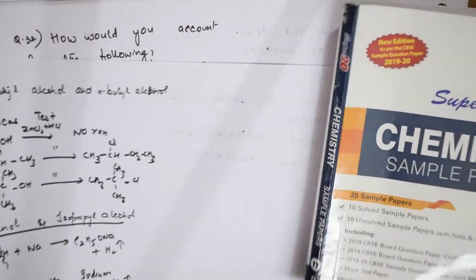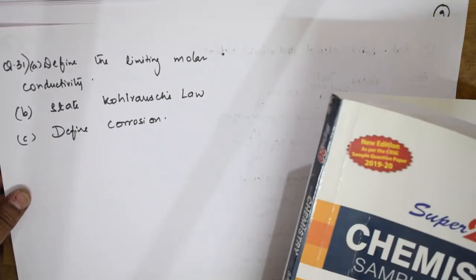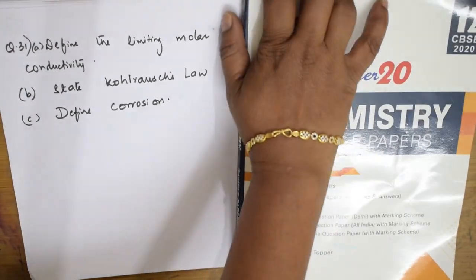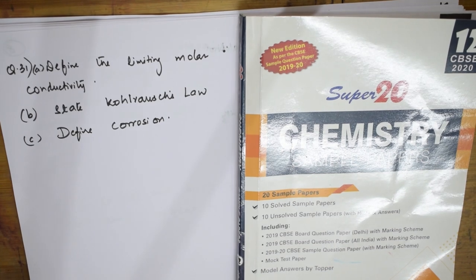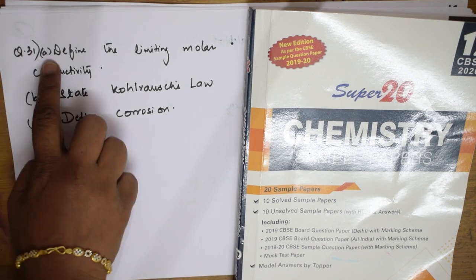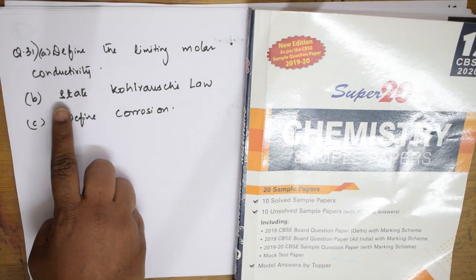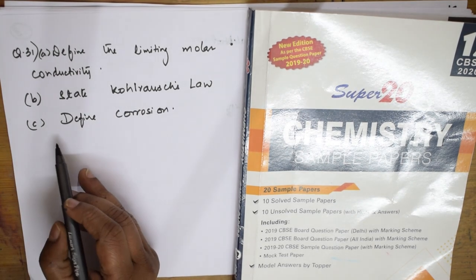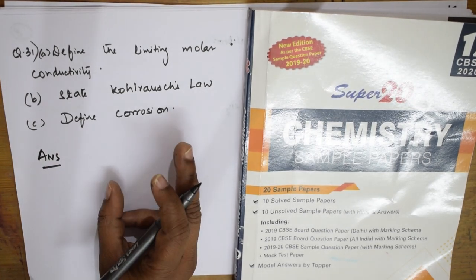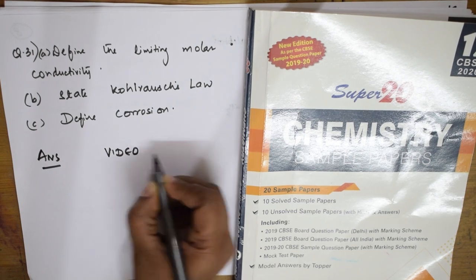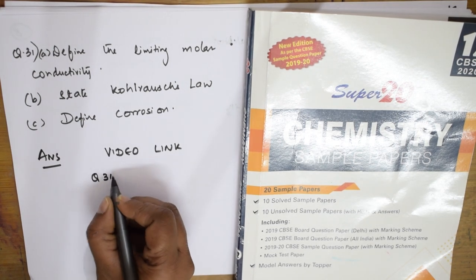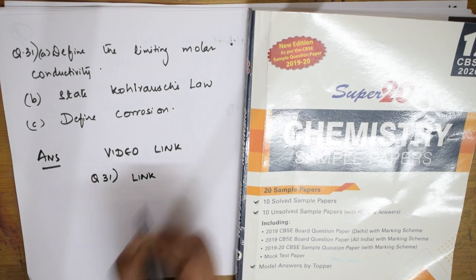Question 31 is from the electrochemistry chapter. The sub-parts ask you to: define limiting molar conductivity, state Kohlrausch's law, and define corrosion. I have done all three videos perfectly and will provide the video links in the description box, mentioning the question number alongside each link.